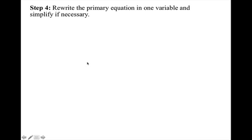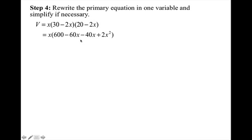So now I'm going to rewrite the primary equation in one variable and simplify if necessary. Instead of eventually having to use the product rule, I can go ahead and distribute through and simplify. Now I have my volume in terms of one variable, x.